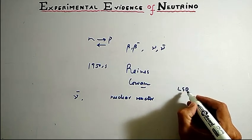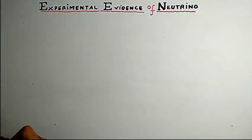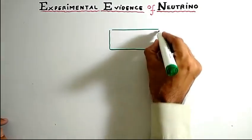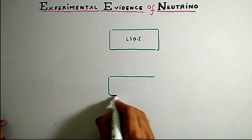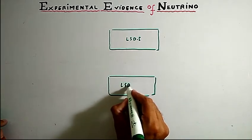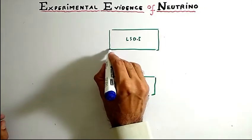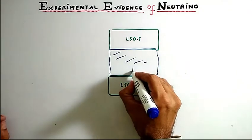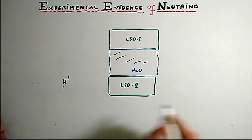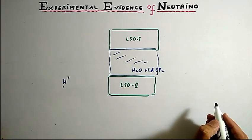The experimental setup was in this way. They used a liquid scintillator detector LSD-1 and liquid scintillator detector LSD-2. There was also a tank of water H2O to provide protons H-1-1. Some amount of cadmium chloride was also added to this tank.